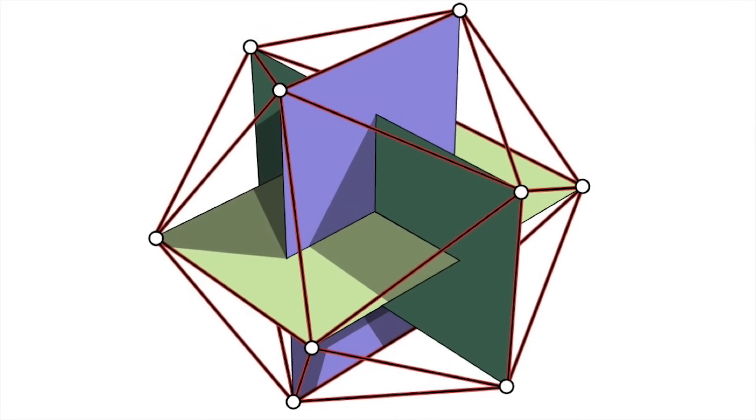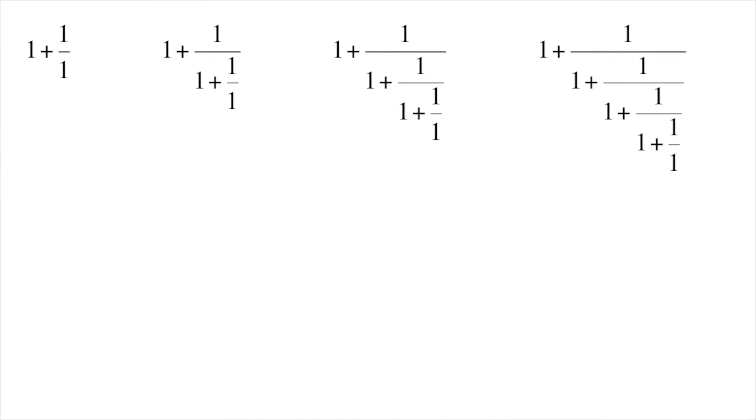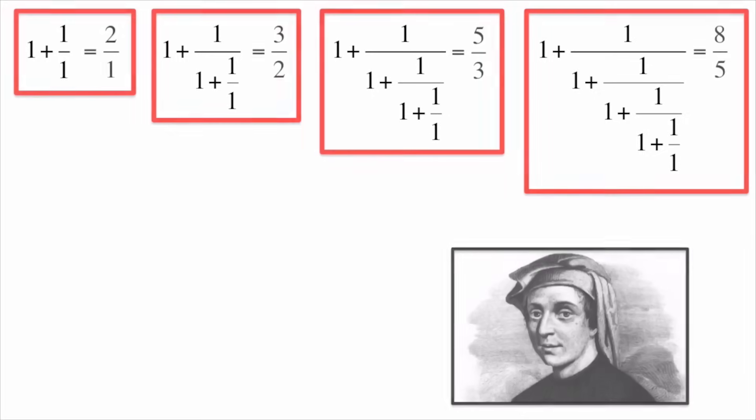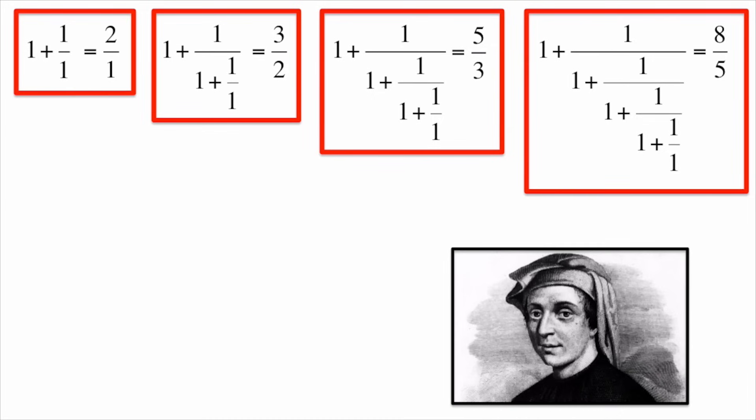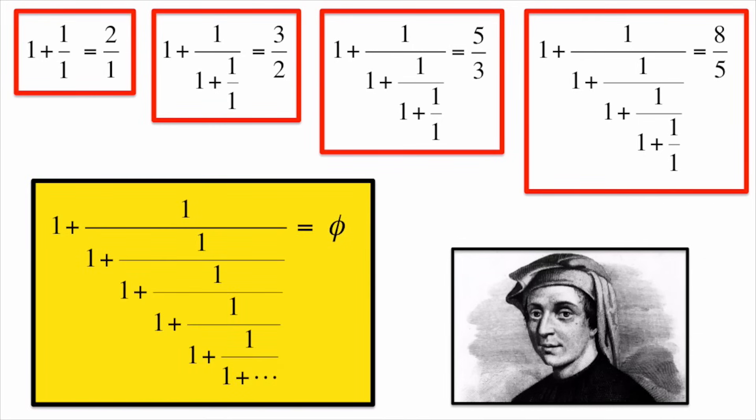Let's connect Phi back to numbers. Suppose we look at these nested fractions with ones. Working them out shows that we have ratios of consecutive Fibonacci numbers. If these fractions continued forever, we have that the limit is the golden ratio.